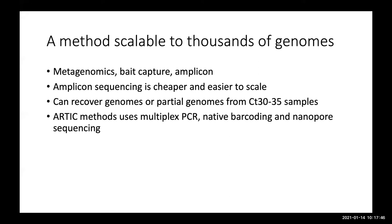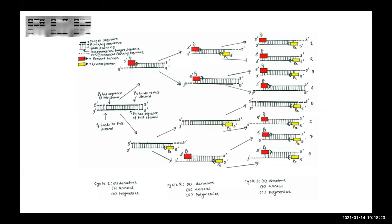We actually use two out of three possible broad classes of sequencing approach: metagenomics, which is untargeted RNA-seq, and then two different classes of targeted methods — either amplicon sequencing or bait capture. Both of these are actually used in COG-UK.